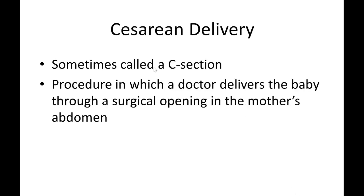After the placenta is expelled, menstrual-like flow begins and continues for several days to about six weeks — approximately 40 days. That completes the normal delivery. Now, what is a C-section? Cesarean delivery is a procedure in which a doctor delivers the baby through a surgical opening in the mother's abdomen.